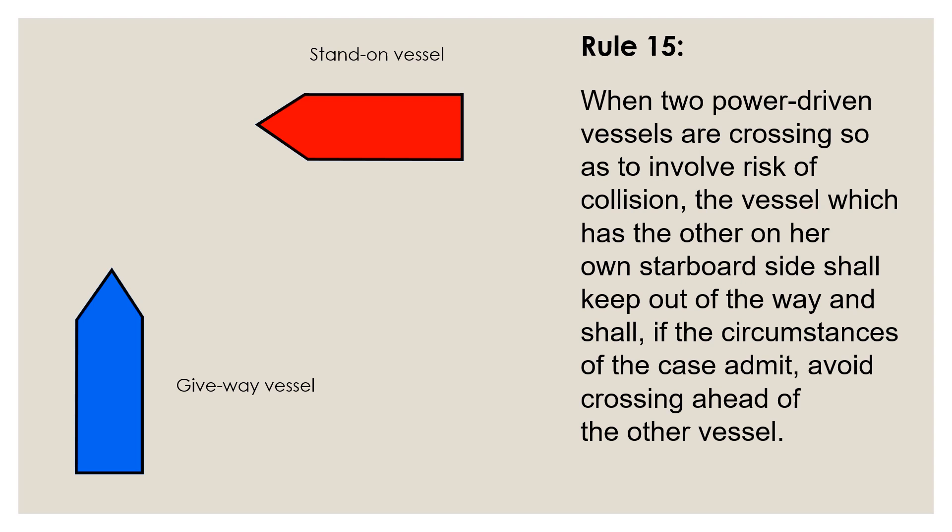A vessel approaching from the quarter so that it could not see a side light would be an overtaking vessel and has to follow the appropriate Rule 13 for overtaking. A vessel which will see both the side lights would be meeting head-on to the other vessel and would have to follow Rule 14, which talks about head-on vessels. So any situation which is offered to you, whether in the orals exam or in the actual situation at sea, you must think clearly as to what this situation is: is this a crossing situation, is it overtaking, or is it a head-on situation?